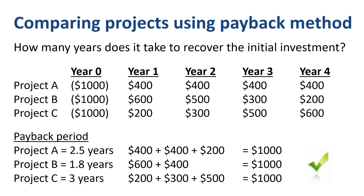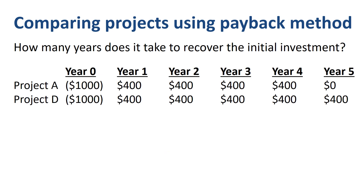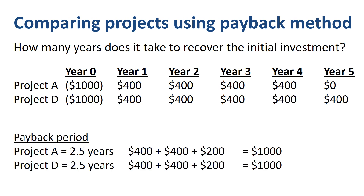The unfortunate limitation of the payback method is that it is unable to help you select between projects with a different duration. For both project A with 4 years of annual $400 benefits, and project D with 5 years of annual $400 benefits, the payback period is 2.5 years — though project D is obviously the most attractive project, but the payback method is unable to tell you that.